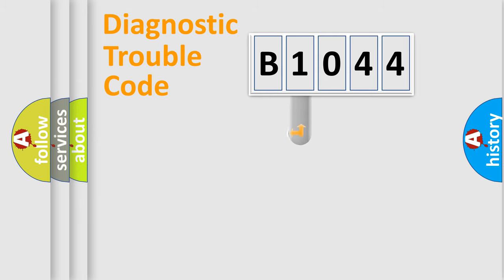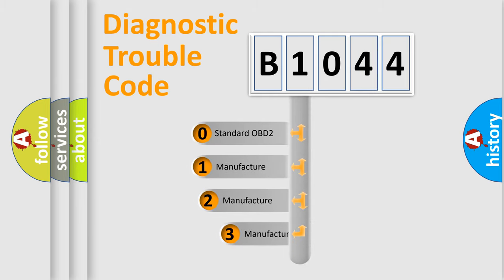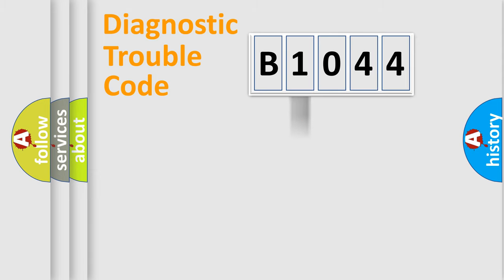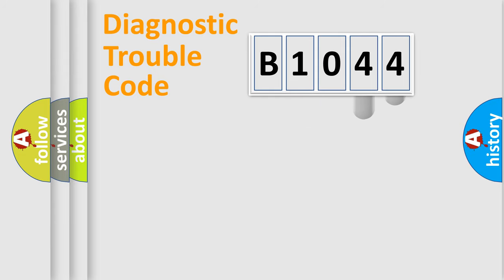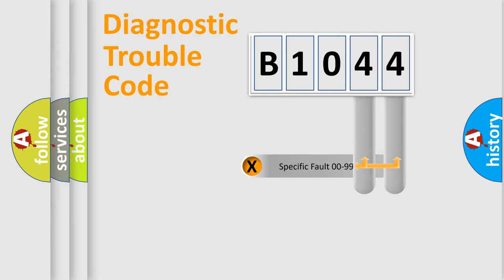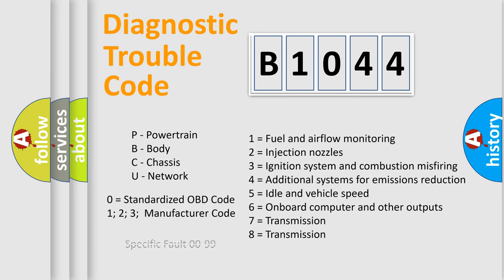This distribution is defined in the first character of the code. If the second character is expressed as zero, it is a standardized error. In the case of numbers 1, 2, or 3, it is a manufacturer-specific error. The third character specifies a subset of errors. The distribution shown is valid only for the standardized DTC code, and only the last two characters define the specific fault of the group. This division is valid only if the second character code is expressed by the number zero.